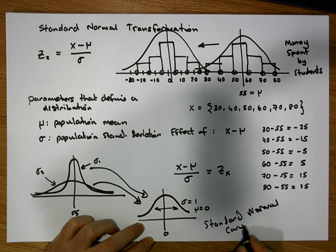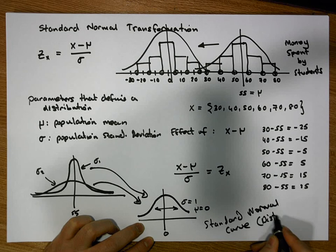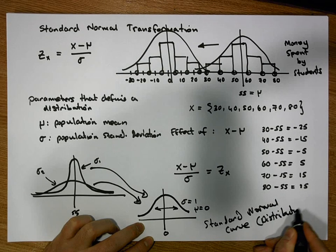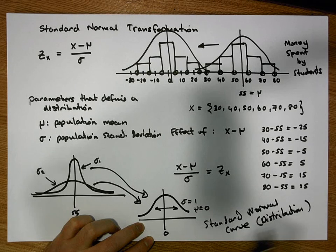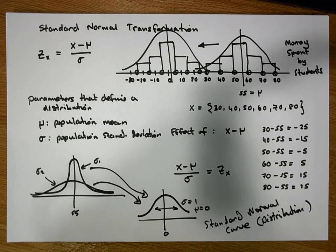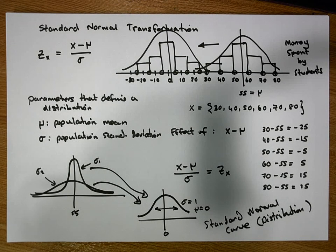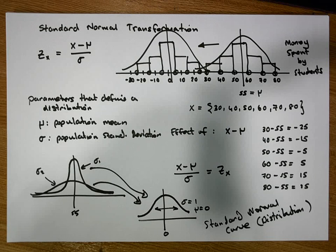We call this resulting curve — with a mean of zero and a standard deviation of one — the standard normal curve, or the standard normal distribution. I hope that helped with this concept. My name is Jonathan Lambert with the Mathematics Development and Support Service at the National College of Ireland. Thanks for your time.